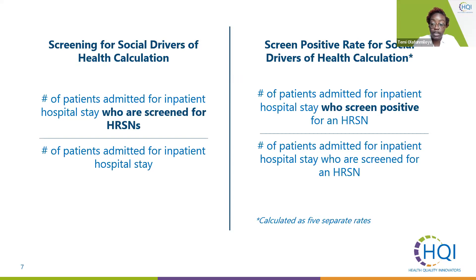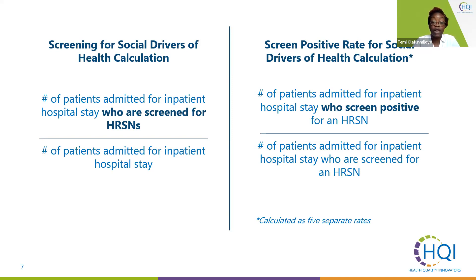Both measures will be reported by submitting a numerator and a denominator. For the screening for social drivers measure, the numerator is the number of patients admitted for an inpatient stay who were screened for all five HRSNs. For the screen positive rate, the numerator is patients screened for all five HRSNs who screened positive for one or more. The denominator is the number of patients admitted who were screened for all five HRSNs. Five separate rates will be calculated for the screen positive measure — one for food insecurity, one for housing instability, one for transportation needs, and so on.